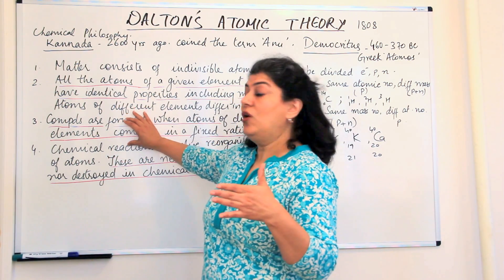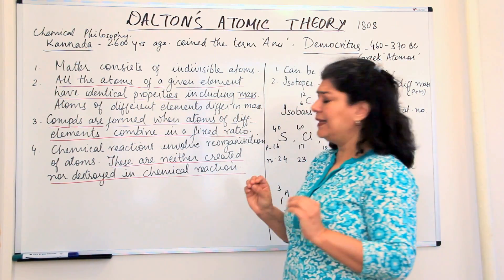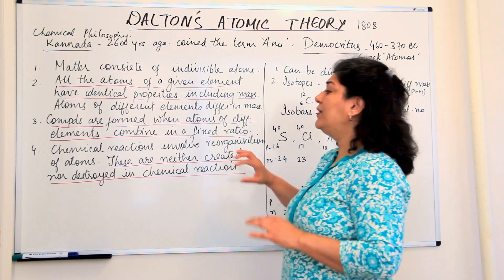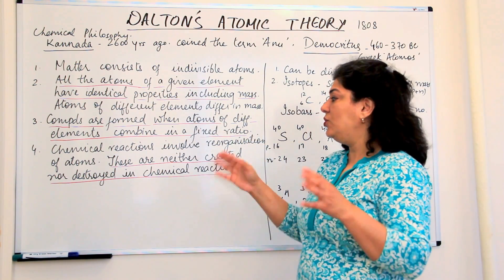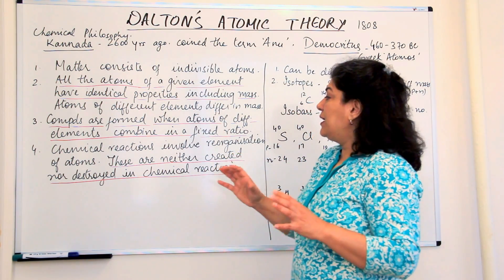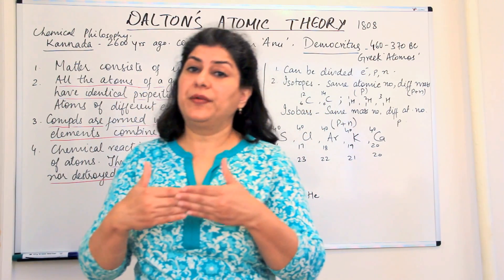So you can explain this law from this particular point in the theory, that they have a fixed ratio. Chemical reactions involve a reorganization of atoms. These are neither created nor destroyed in chemical reactions. Chemical reactions just involve the reorganization when a chemical reaction takes place.